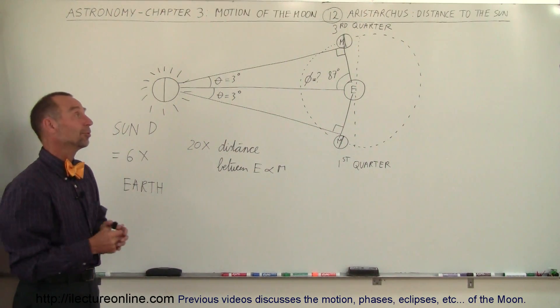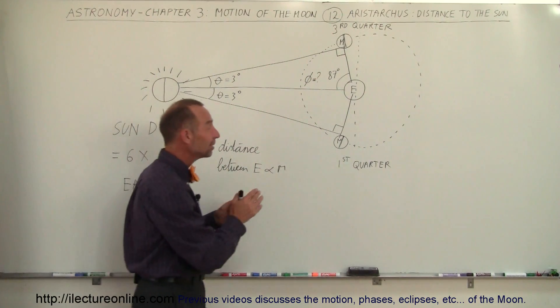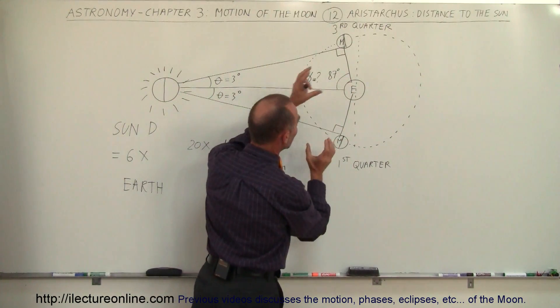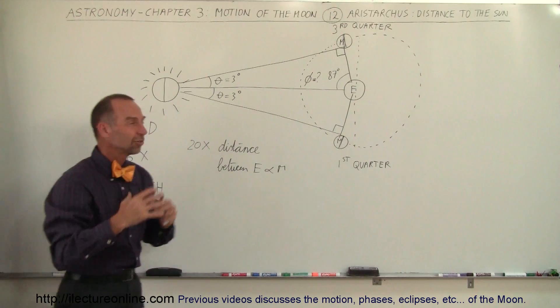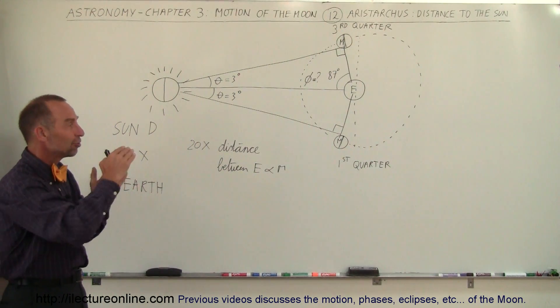That was an amazing accomplishment just to think about that—just knowing and understanding the phases of the moon and realizing that the sun was a spherical object, the earth was a spherical object, the moon was a spherical object. They were positioned like that, and the way the light would shine on the moon and cast different shapes to the moon.